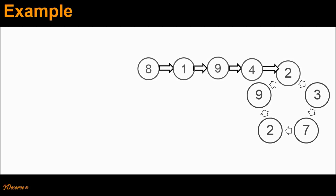Say we are given this linked list. As you can see, there is a loop in this linked list which starts at node 2. So the problem statement is, if we are given this linked list, we have to return the pointer to the highlighted node, which basically is the start of the loop.